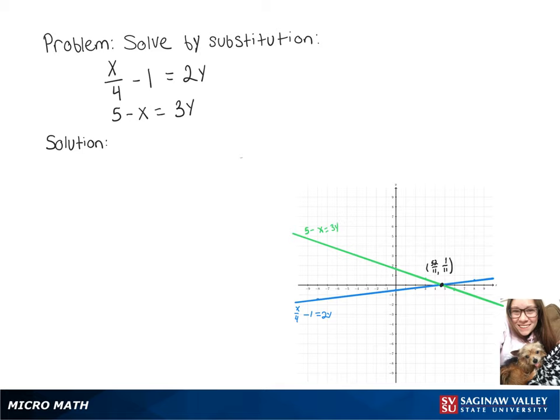We want to solve by substitution, so let's get x by itself in that first equation by adding the 1 over and multiplying the whole thing by 4. So we've got x equals 8y plus 4.